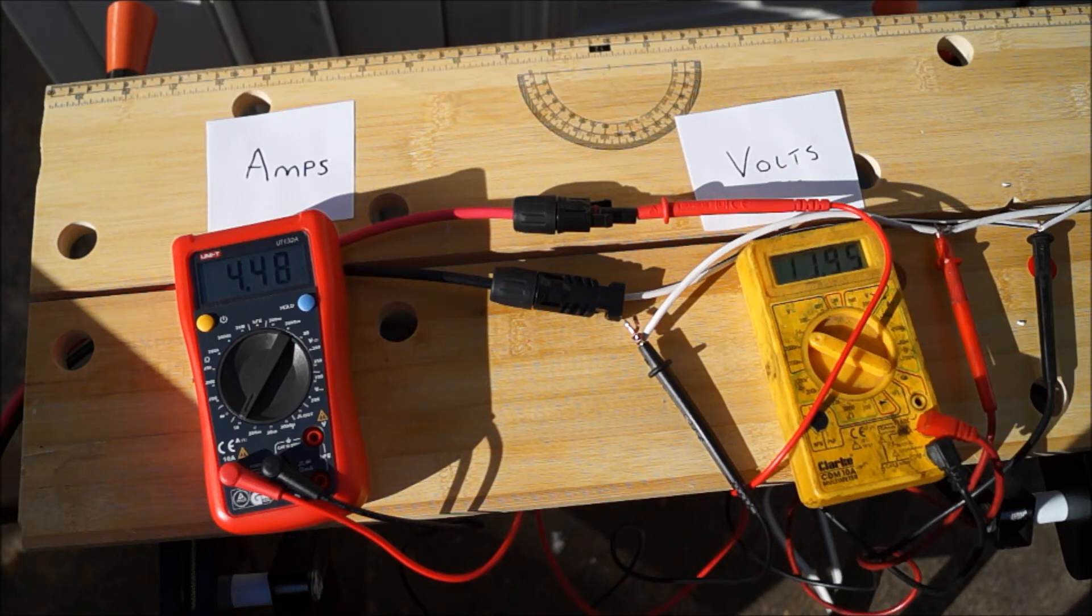So what the solar charge controller does is ramps up the voltage to a realistic battery charging voltage but regulates the amps equally. So if you're getting 7 volts out of the solar panel, it will double up the volts but half the amps. This is all explained in the other video about amps explained.